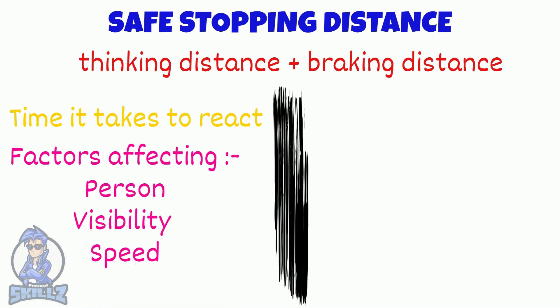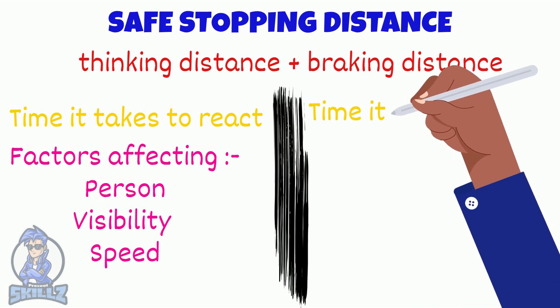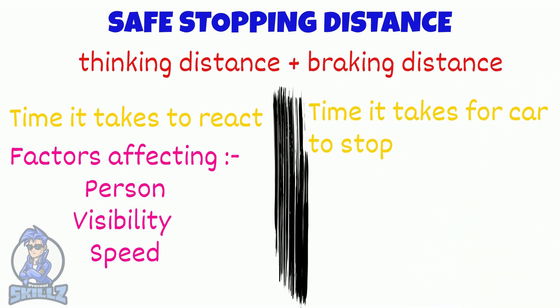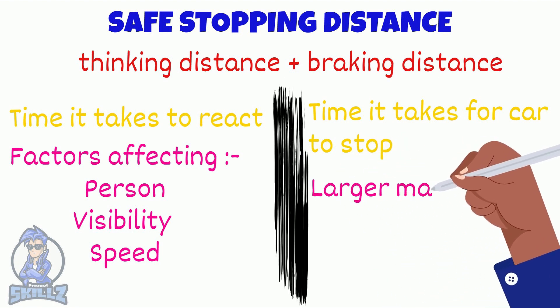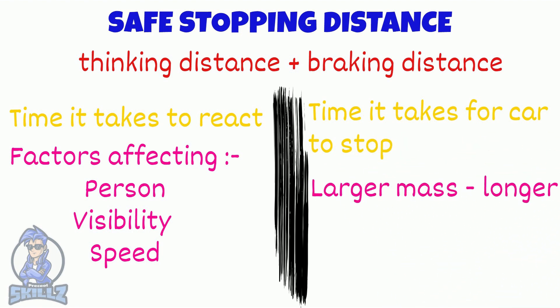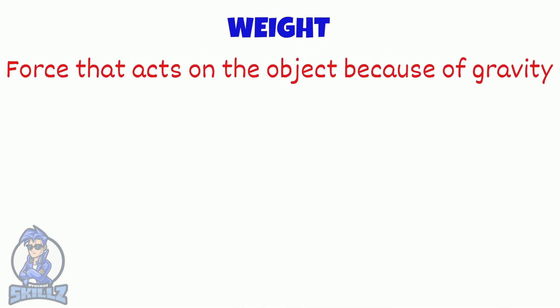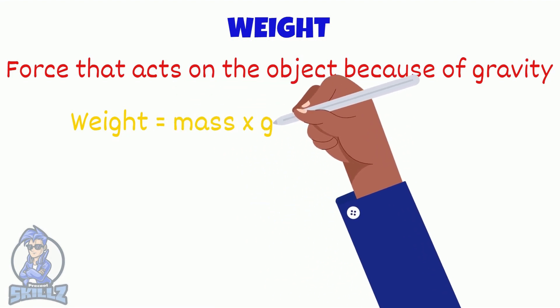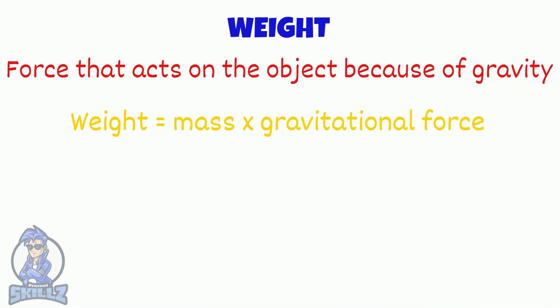Next the braking distance. This is the time it takes for you to press the brake and for the car to stop. Vehicles with a larger mass take longer to stop due to the F equals MA equation mentioned before. Finally, weight is the force that acts on an object because of gravity. This weight depends on the mass and the gravitational force, noted by the equation w equals mg. Weight equals mass into gravitational force.